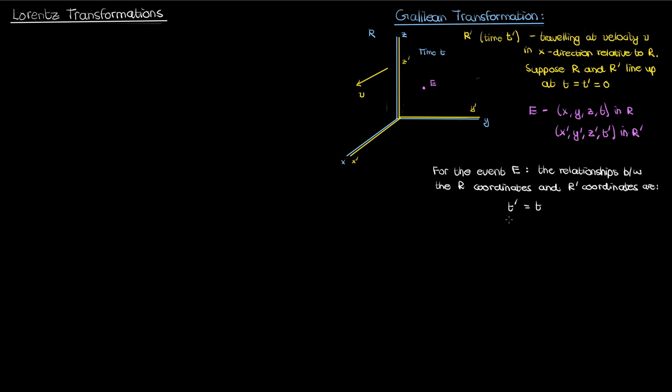The time t' and t are the same. In classical mechanics, 5 seconds elapsed in r is the same as 5 seconds elapsed in the reference frame r'. The same applies for the y and z coordinates — they're both equal to their primed counterparts because the reference frame r' is not traveling in the y and z direction, it's only traveling in the x direction.